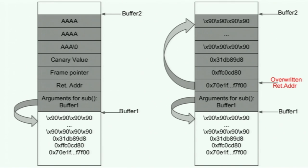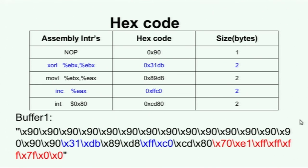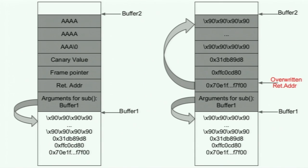Now we will look at the contents of this attack string. In the initial part of the string, there are NOP instructions — the hex code for NOP is 0x90. The rest of the instructions are used to invoke the exit system call. The hex code for the XOR instruction is 0x31 0xDB, which is 2 bytes long. The part of the string highlighted in red is actually the new return address, which is pointing to the start of buffer2.